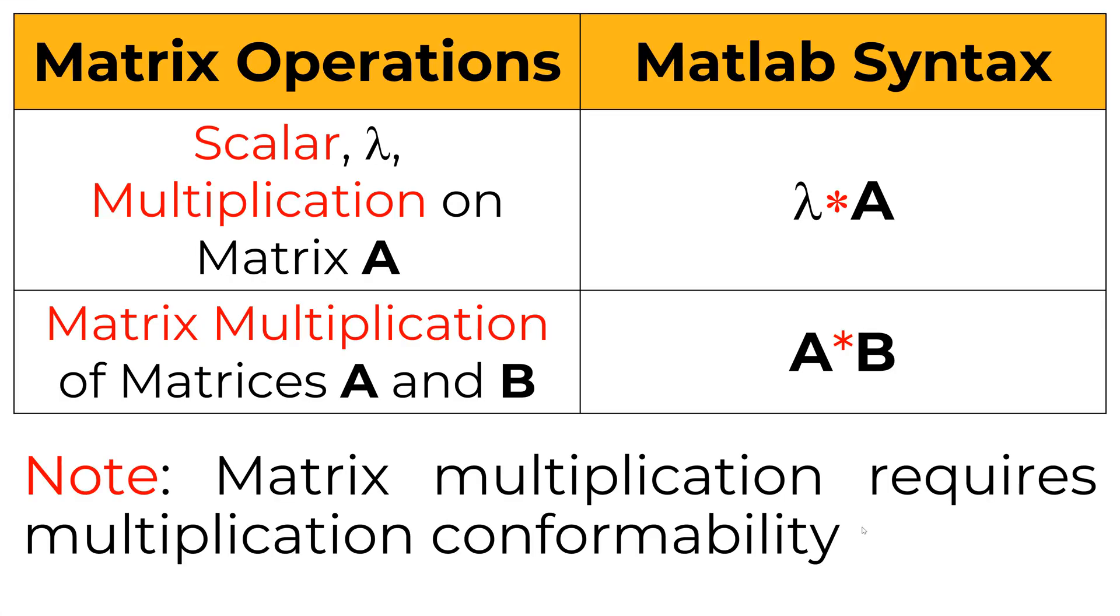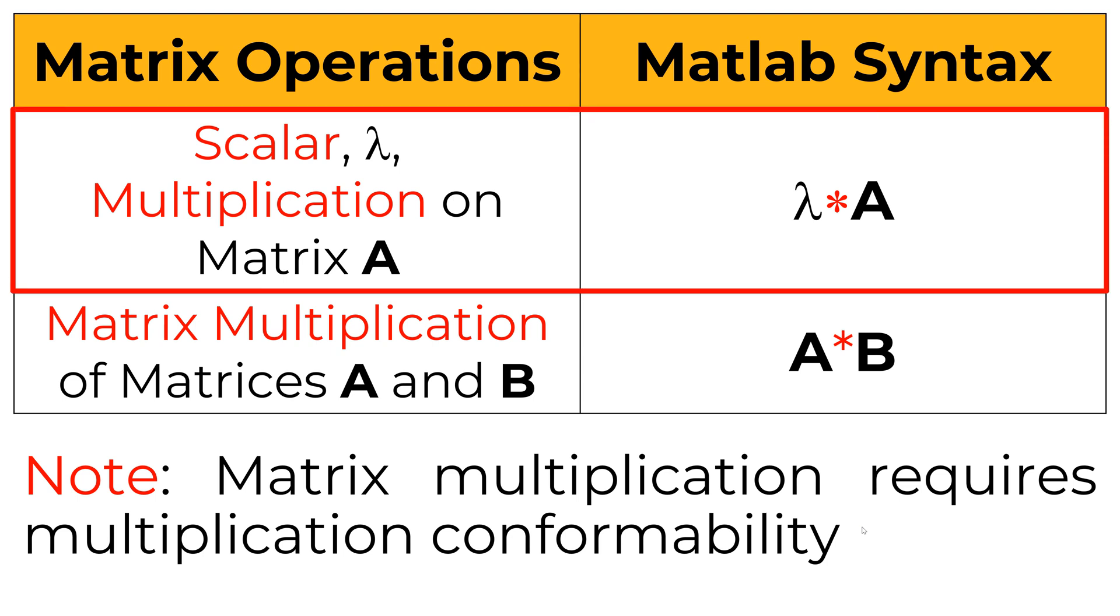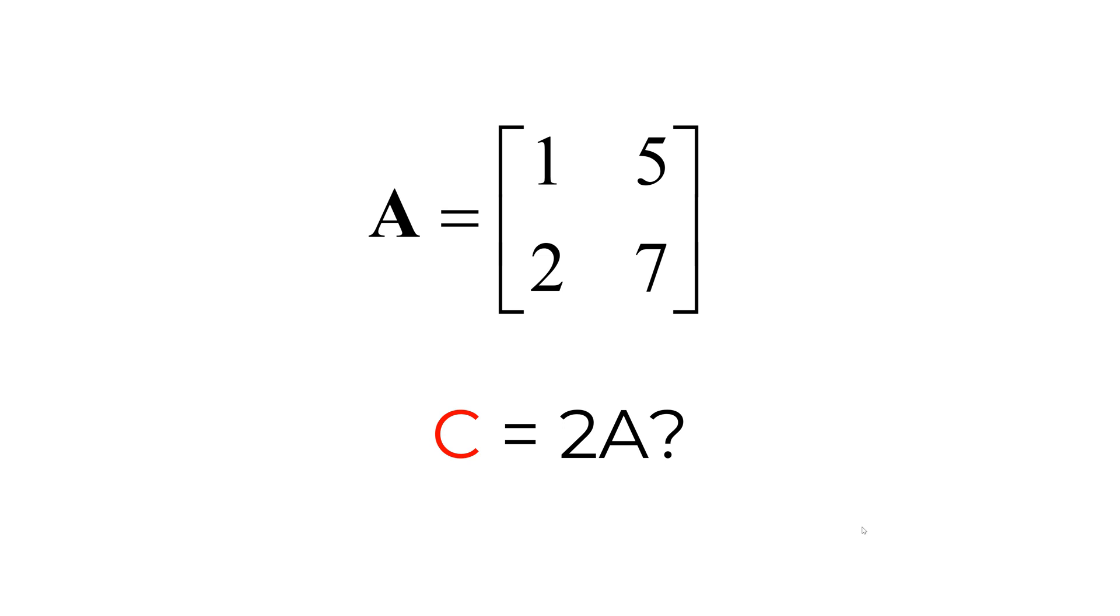Consider a given 2-by-2 matrix A. For scalar multiplication, consider scalar quantity lambda and matrix A. The scalar multiplication is element-wise multiplication of scalar quantity lambda. You can simply use lambda star sign and matrix A. 2-by-A means that it needs to double all the elements in the matrix A using scalar multiplication.